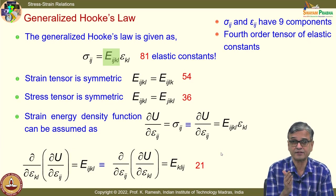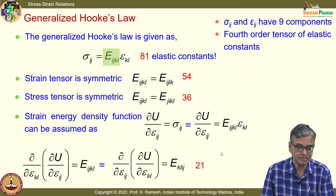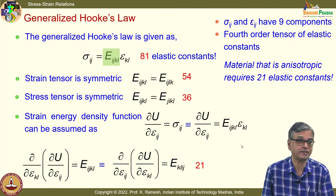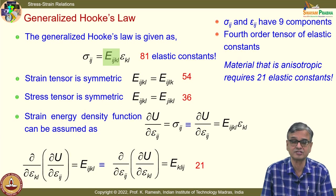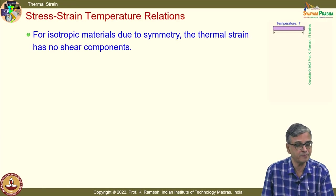When I have an isotropic material, I need just two elastic constants. It makes your life extremely simple. That is one of the reasons why we want to have analysis of isotropic material — even in situations where it is clearly not isotropic, we make that simplification.